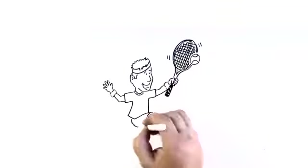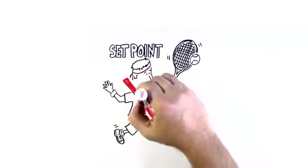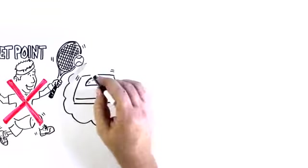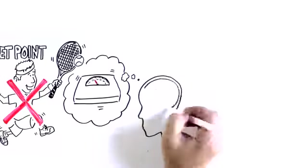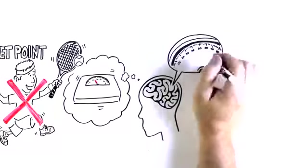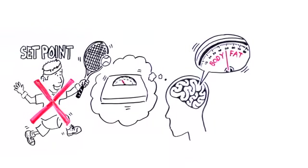First, let's talk about set point. No, I'm not talking about the point in a tennis match when one player is about to beat the other. I'm talking about a theory that says that no matter what you consciously want your weight to be, your brain has its own sense of how much body fat it should have on board.